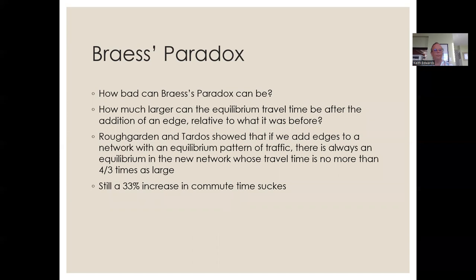So how bad can Braess's paradox be? How much larger can the equilibrium travel time be after the addition of an edge relative to what it was before? Roughgarden and Tardos showed that if we add edges to a network with an equilibrium pattern of traffic, there's always an equilibrium in the new network whose travel time is no more than 4/3 times as large. It's not as depressing as it could be, but a 33% increase in commute time certainly stings.